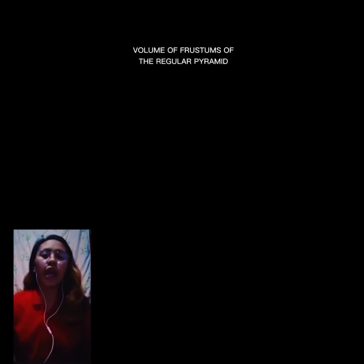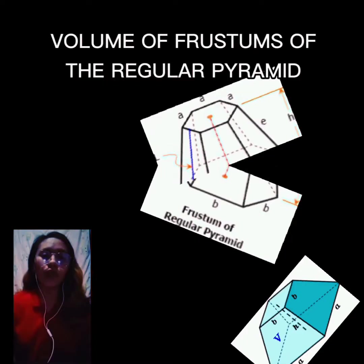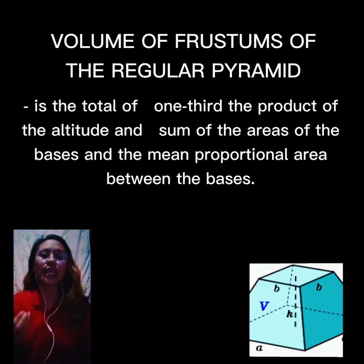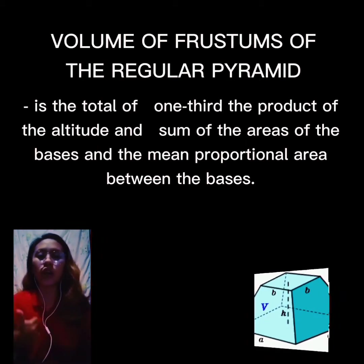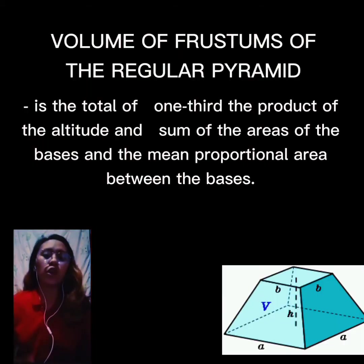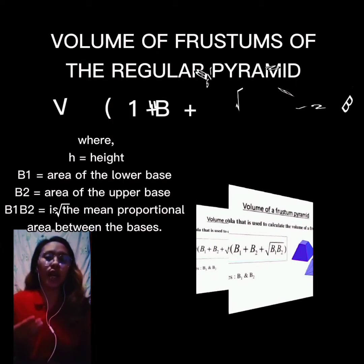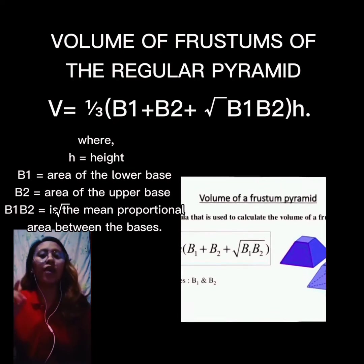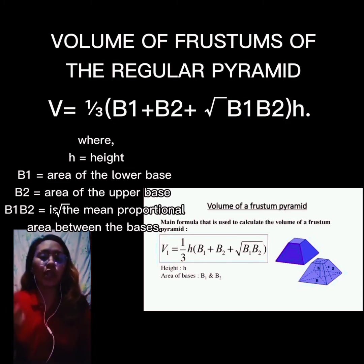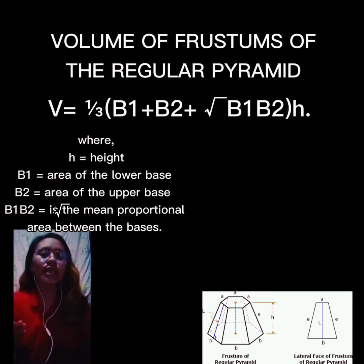The volume of frustums of a regular pyramid is one-third the product of the altitude and the sum of the areas of the bases and the mean proportional area between the bases. The formula is: V = (1/3) × h × (B1 + B2 + √(B1 × B2)), where h is the height, B1 is the area of the lower base, B2 is the area of the upper base, and √(B1 × B2) is the mean proportional area between the bases.